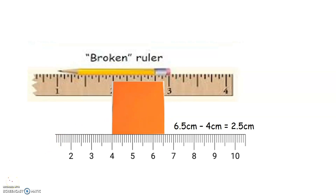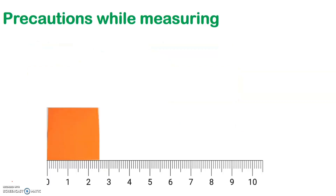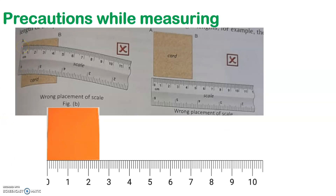So now we have learned how we can measure the length of objects with the help of a scale. Now let us learn what precautions we need to take before we measure the length of objects. The first thing to keep in mind is that you should not place your scale at an angle like in the first picture. Your scale should not be in a slanting position, but should always be in a straight position along the length of the object. Then only you will get the correct measurement.